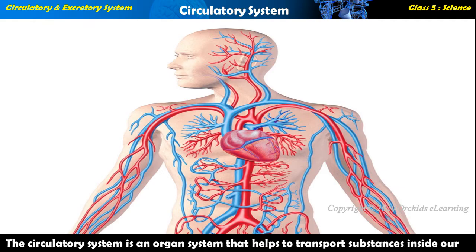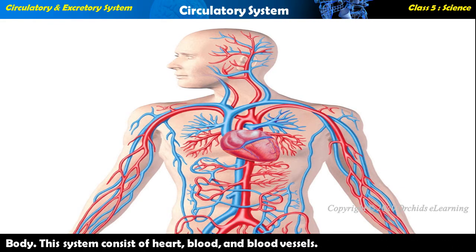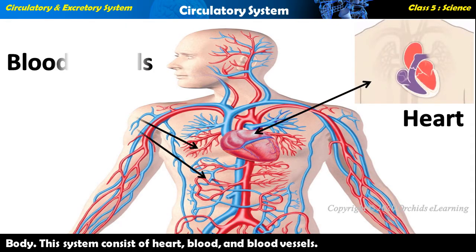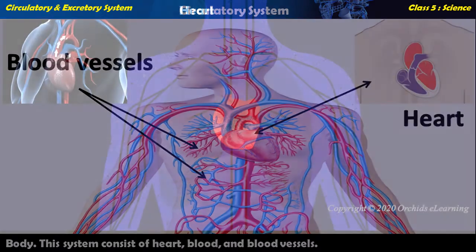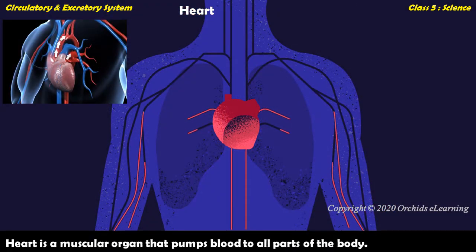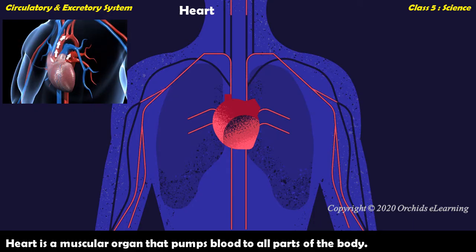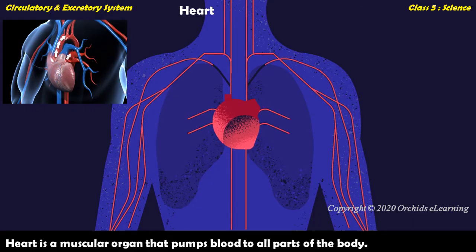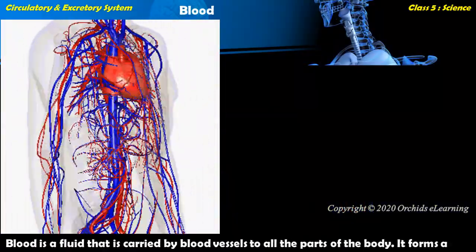The circulatory system is an organ system that helps to transport substances inside our body. This system consists of the heart, blood, and blood vessels. The heart is a muscular organ that pumps blood to all parts of the body. Blood is a fluid that is carried by blood vessels to all parts of the body.